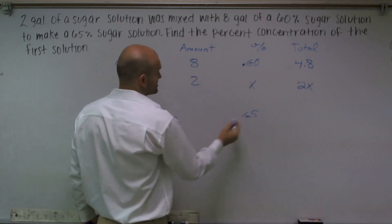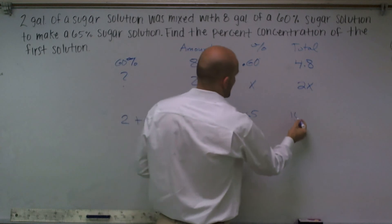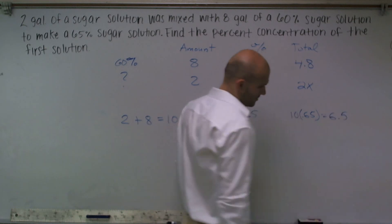So if I multiply, if I have my amount and my percentage is, my amount is ten, my percentage is 65. If I do ten times .65 to get my total, that's going to give me 6.5.